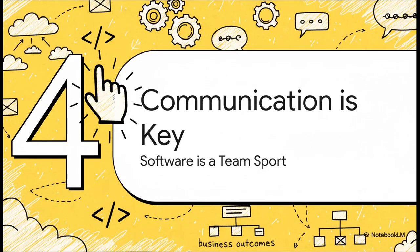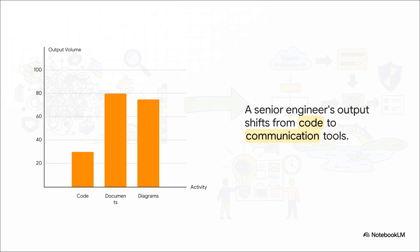All right, our next point might just be the most underrated skill in all of engineering. We have this image of developers as the solitary coders in a dark room. But the reality is, modern software is a team sport. And in that sport, communication isn't a soft skill. It is a core technical skill. You know, if you were to actually measure a senior engineer's output, you'd see something kind of wild. The amount of code they write might actually go down. But their output of design documents, architectural diagrams, and just clear, well-written explanations, it skyrockets. Their main job shifts from just producing code to creating clarity and alignment for the entire team.